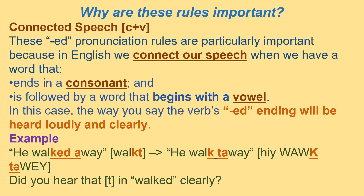One reason these rules are important is connected speech — consonant plus vowel. These -ed pronunciation rules are particularly important because in English we connect our speech when a word ends in a consonant and is followed by a word that begins with a vowel. In this case, the -ed ending will be heard loudly and clearly. For example: 'He walked away' — did you hear that /t/ in 'walked' clearly?